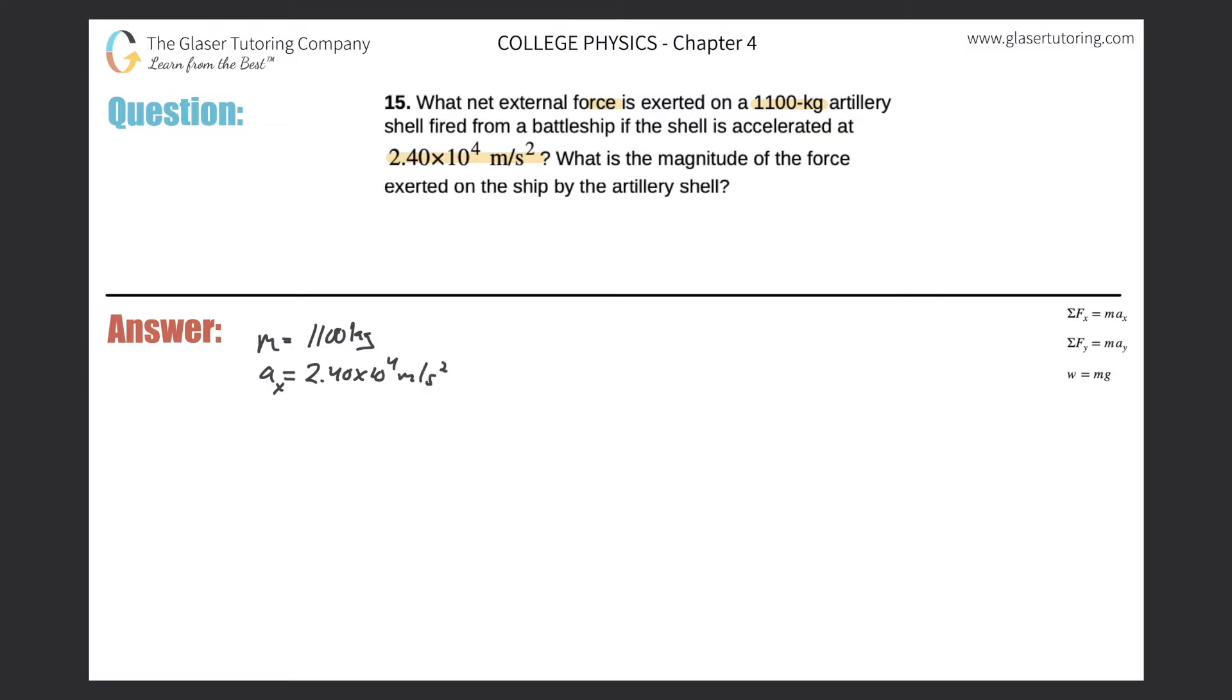If I got to find now the net force on it, it means find the sum of the force. So do I have an equation that relates those three variables? Of course I do. It is this one. Sum of the forces in the x direction is equal to the mass of the object multiplied by the acceleration in that same direction.